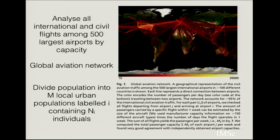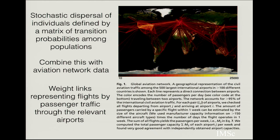The model looked at all international and civil flights among the 500 largest airports. The population was divided into M local urban populations labeled i, each containing N_i individuals, with an SIR model applied for each. Individuals moved as stochastic dispersal defined by a matrix of transitional probabilities, combined with aviation network data. The importance of each airport was weighted by passenger traffic — an airport with 200,000 people per day traveling through it figures more importantly than one with 200 people per day.